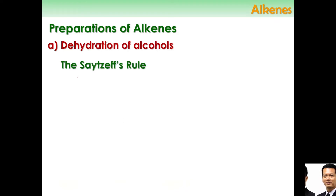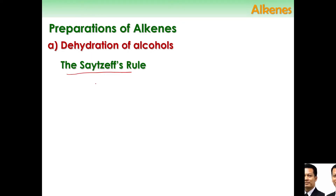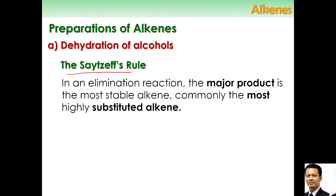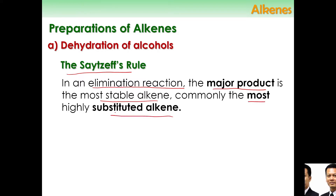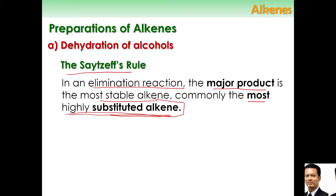One rule that you need to know about dehydration of alcohol is Zaitsev's rule. What does Zaitsev's rule tell you? In an elimination reaction — and dehydration of alcohol is an elimination reaction — the major product is the most stable alkene, commonly the most substituted alkene. What is a highly substituted alkene?